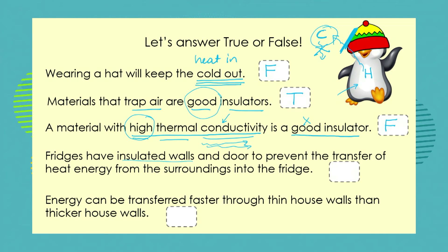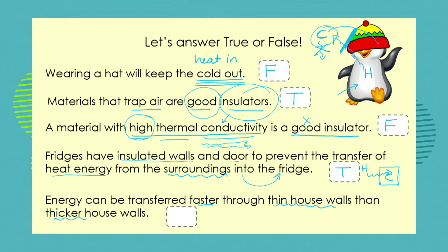Next statement: fridges have insulated walls and an insulated door to prevent the transfer of heat energy from the surroundings into the fridge. This time we've got it right — we're not saying cold is escaping from the fridge, we're saying we're preventing heat from the surroundings from being transferred into the cold fridge. That is true. And finally: energy can be transferred faster through thin house walls than thicker house walls. The thicker an insulator is, the better it is at insulation, so that statement is also true.